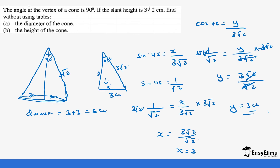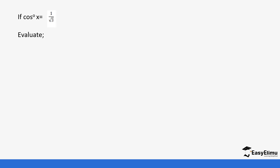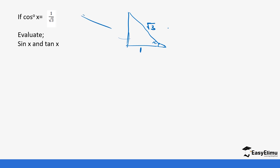So that's how we use the values we've got to solve questions. Extending that knowledge — not necessarily using 45 degrees — if you are given cos x equals 1 over root 3, you can go ahead and draw the right-angled triangle. This is the acute angle x, and cos we know is adjacent — which is 1 — over hypotenuse — which is root 3. We have been asked to evaluate sine of x and tan of x, so we need the opposite side.